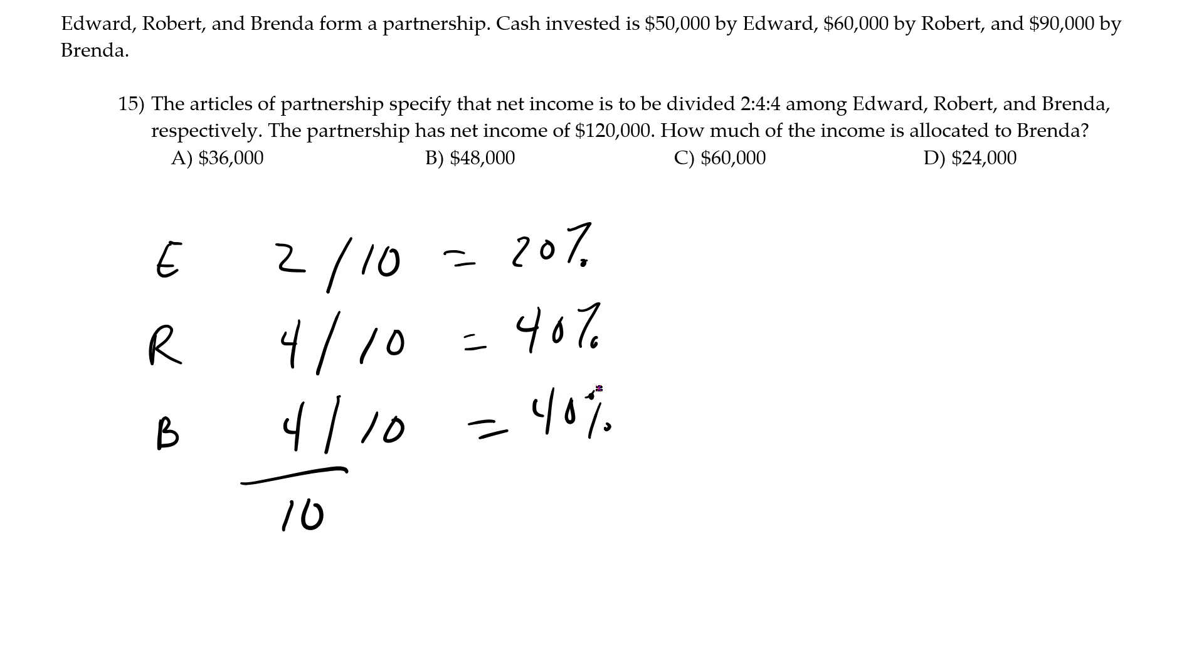And you know they had income of $120,000, so Edward gets twenty percent of $120,000, Robert gets forty percent of $120,000, and Brenda gets forty percent of $120,000.